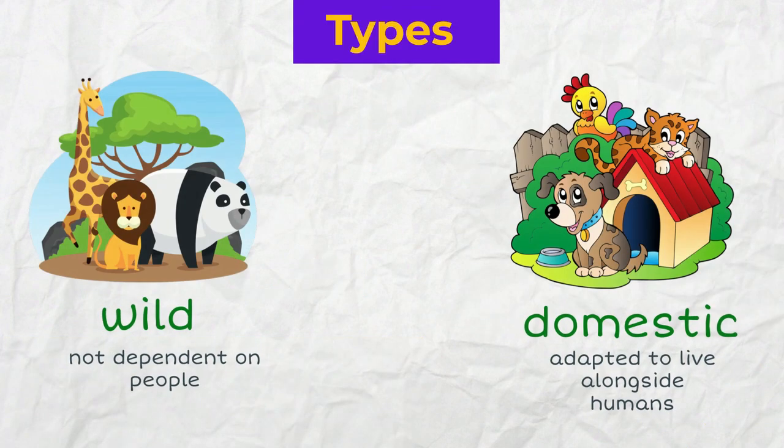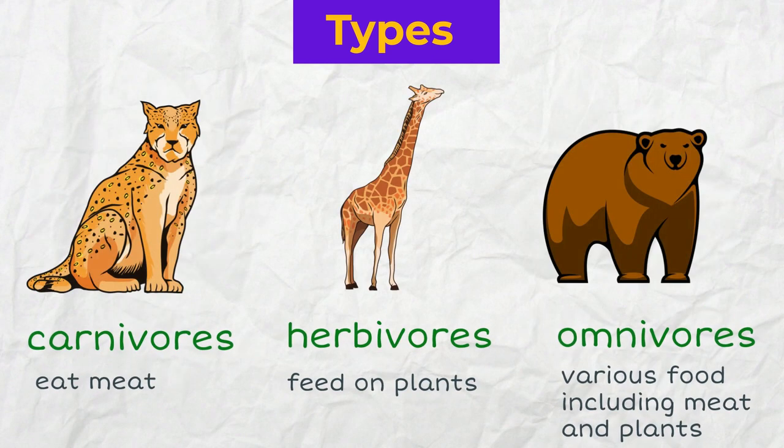Most broadly, all animals can be wild and domestic. Wild animals are not dependent on people. Domestic animals have adapted to live alongside humans. Those that eat meat are called carnivores, and animals that feed on plants are herbivores. Those that eat various food, including meat and plants, are called omnivores.